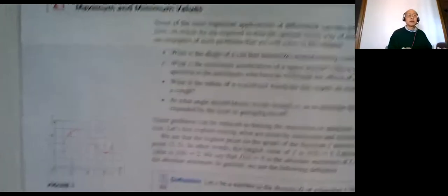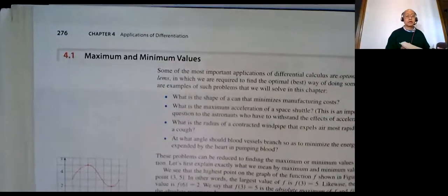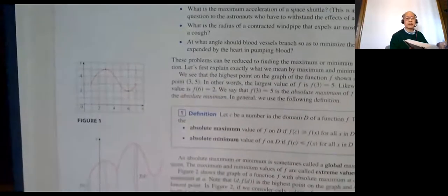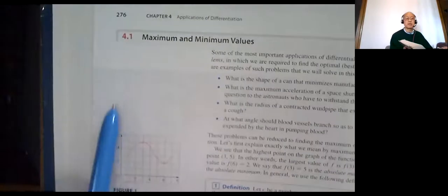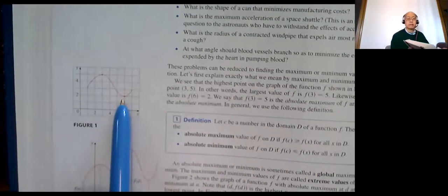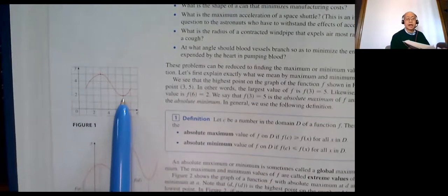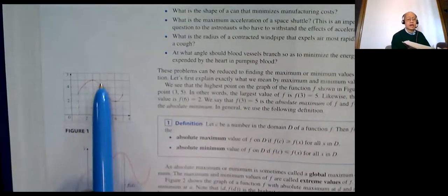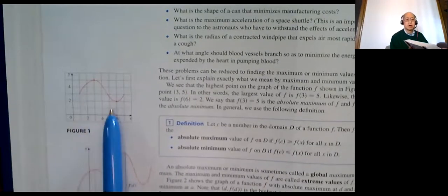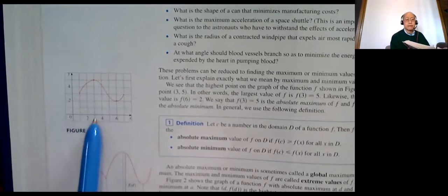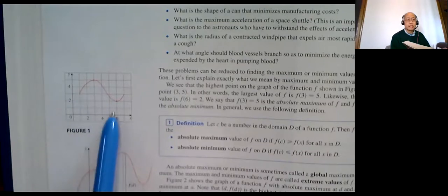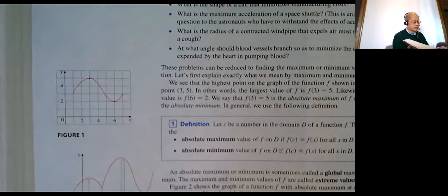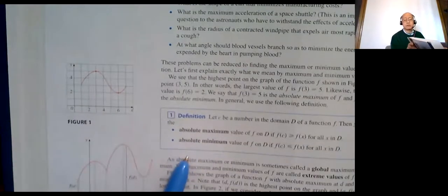Chapter 4 is Applications of Differentiation. There's going to be a lot of graphing in this chapter. So page 276, Maximum and Minimum Values. If you look at Figure 1 on page 276, this looks like a maximum value and this looks like a minimum value. Absolute maximum, absolute minimum — this is a very formal definition, but I don't think you need it. It's whatever is the highest point. The highest function value is the absolute maximum; the lowest function value is the absolute minimum. So it looks like (3, 5) is the absolute maximum and (6, 2) is the absolute minimum for this particular graph.